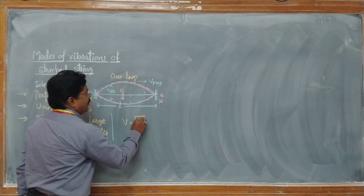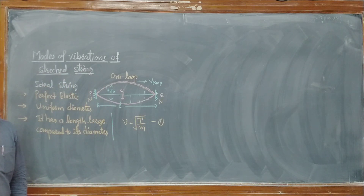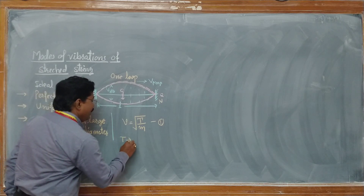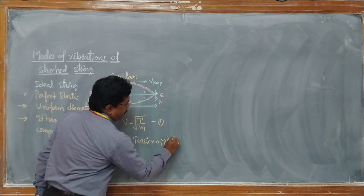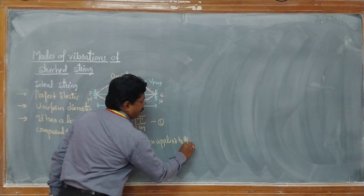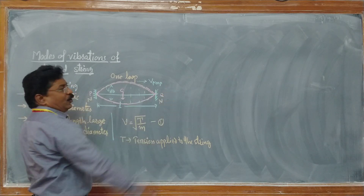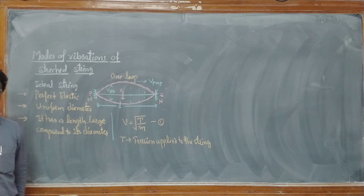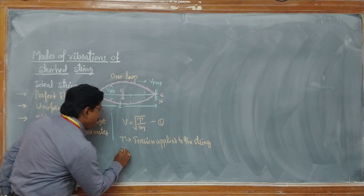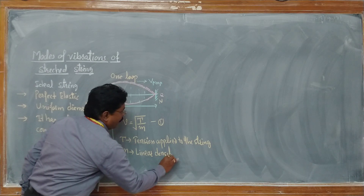In a previous video we derived an expression for the velocity of the transverse wave traveling along a stretched string. The formula is: v = √(T/m). We call this equation 1. Here T is the tension applied to the string — the tension force under which it is kept stretched between the two fixed points — and m is the linear density of the string.